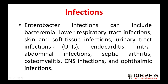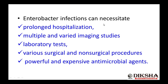We have a variety of infections because Enterobacter comes under opportunistic infection. Bacteremia refers to the presence of bacteria in the blood. Other infections include lower respiratory tract infections, skin and soft tissue infections, urinary tract infections, endocarditis, intra-abdominal infections, septic arthritis, osteomyelitis, CNS infections, and ophthalmic infections.